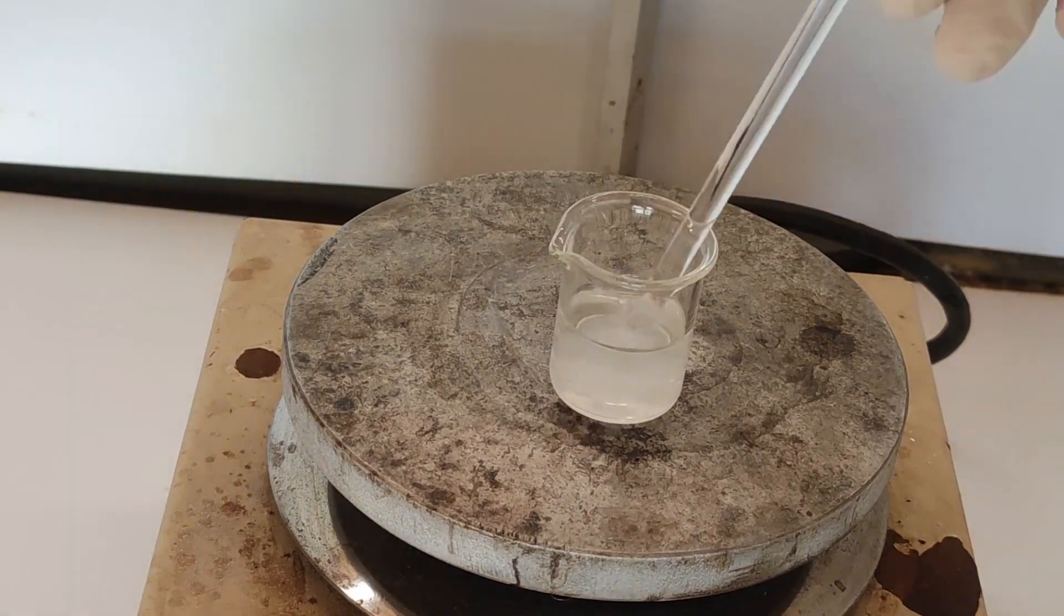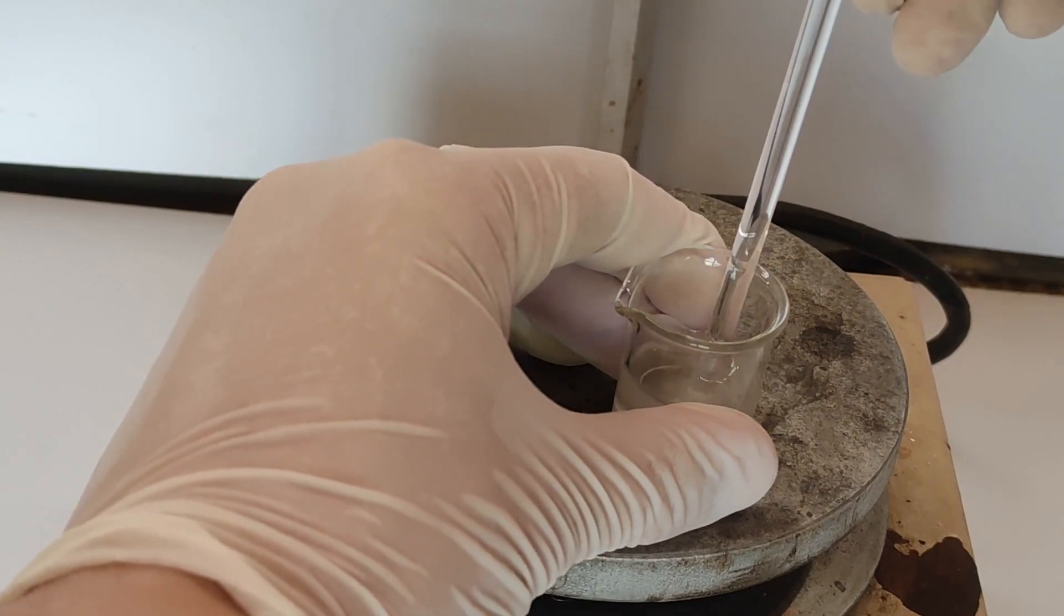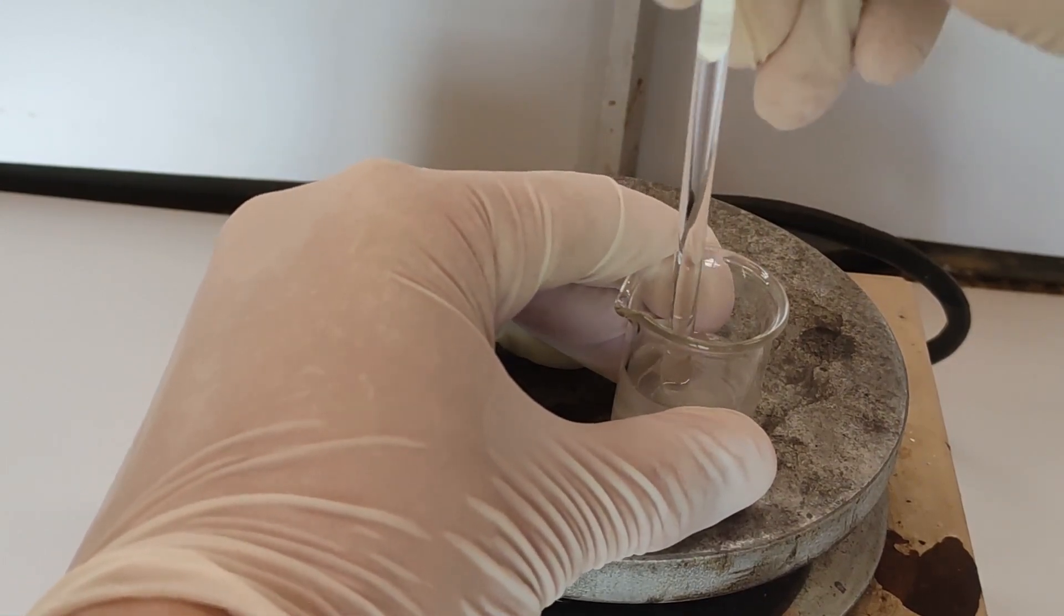First, some sodium hydroxide is dissolved in a small amount of water. This will prevent decomposition of the sodium borohydride later on in the synthesis.